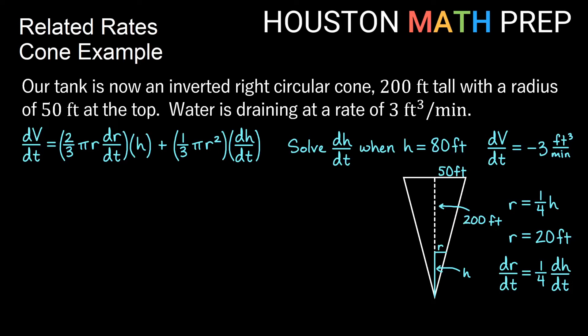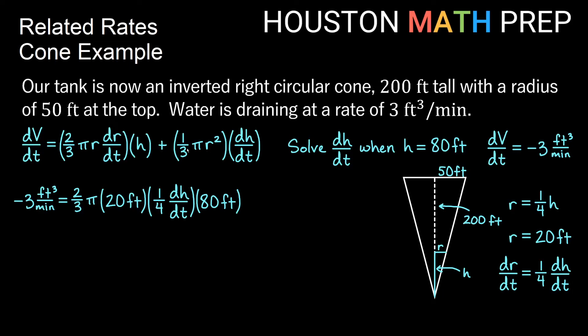Now we have everything we need. We plug in negative three for dV/dt, (2/3)π times 20 for the first r, (1/4)(dh/dt) for dr/dt, and 80 for h. Then plus (1/3)π times 20 squared for r², times dh/dt. It's okay to have both dh/dt terms here since that's what we're solving for.